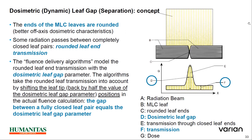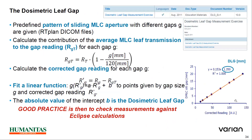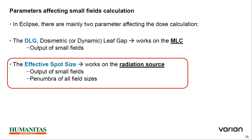These are the formulas used to calculate the dosimetric leaf gap. Those who are using Varian machines are quite aware of these.